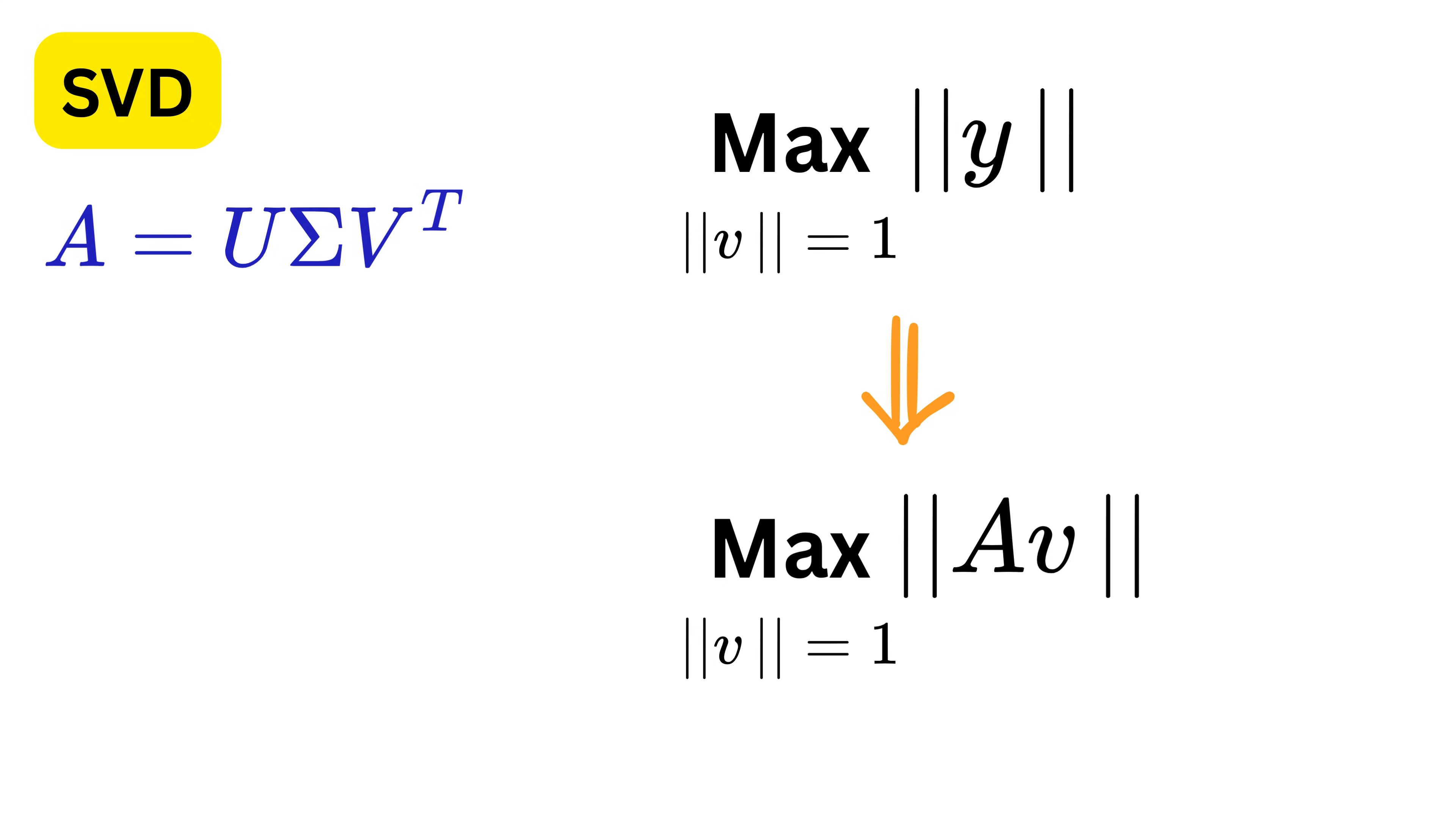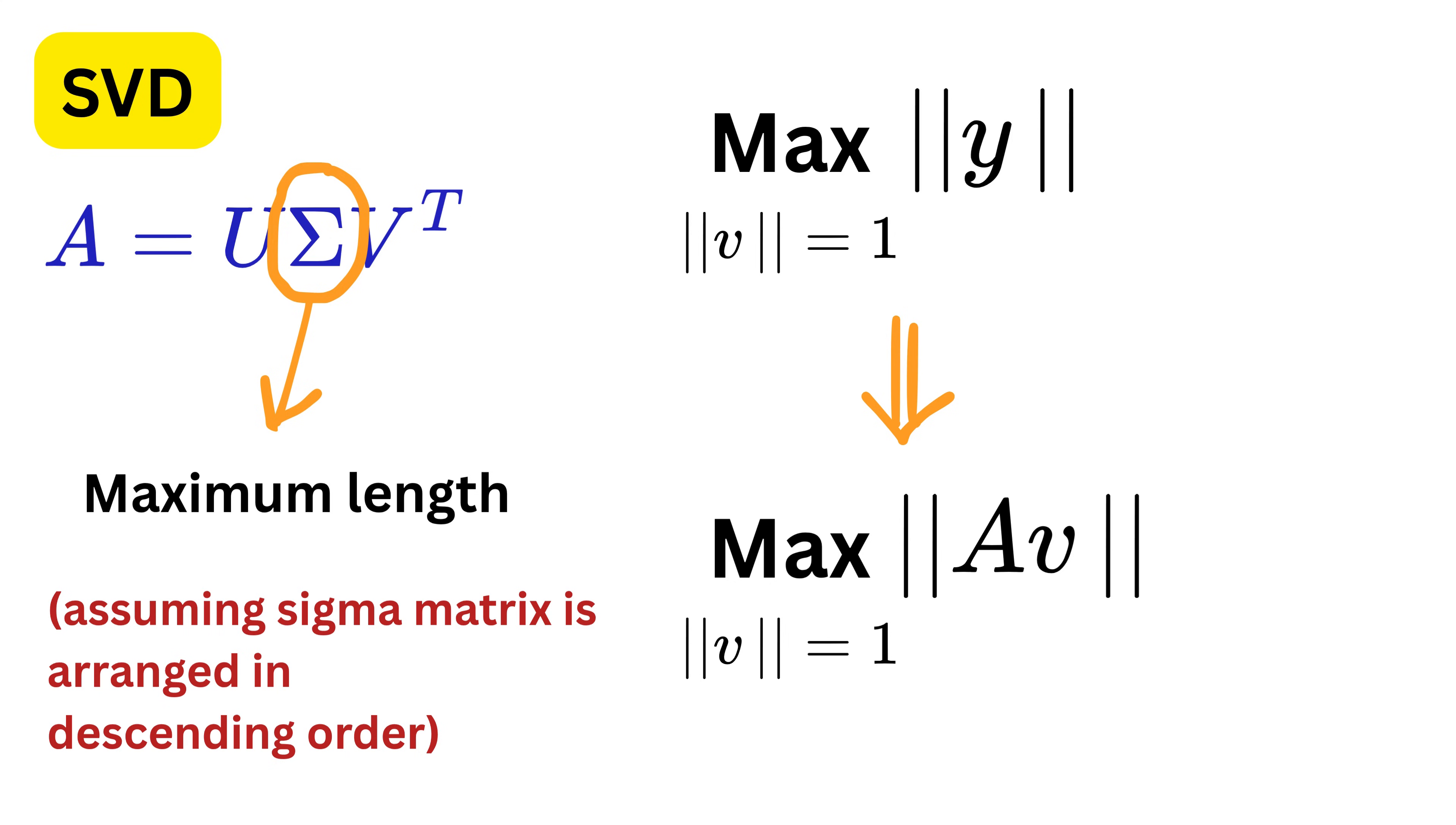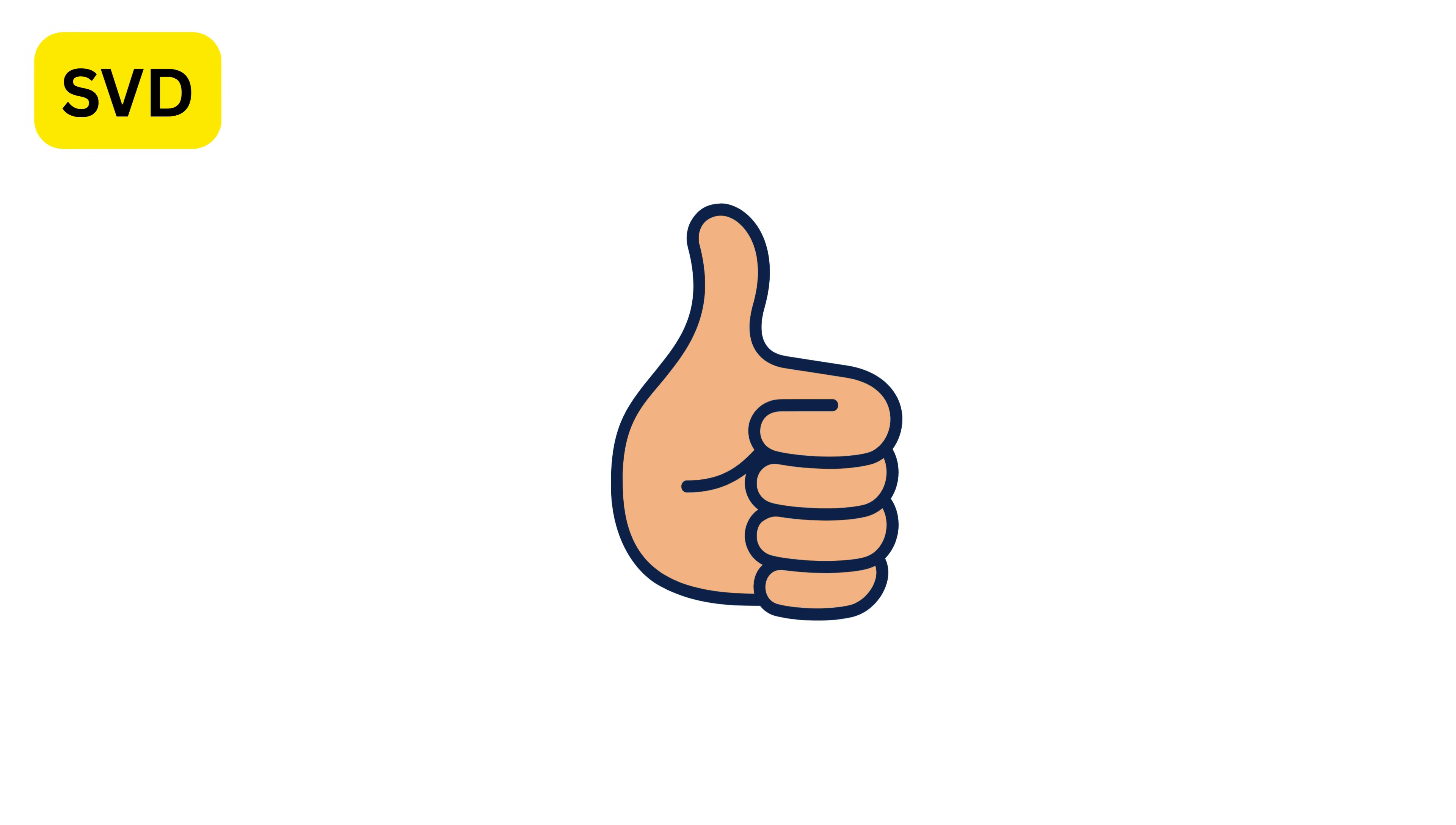The direction that gives the biggest output length is exactly the first column of the matrix U, and that maximum stretch is the first value in the sigma matrix. Nice.